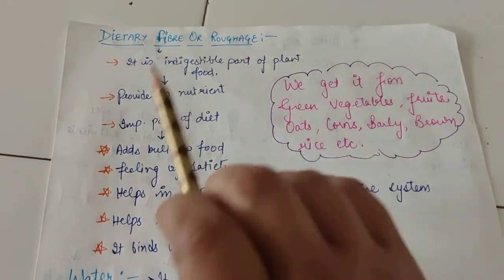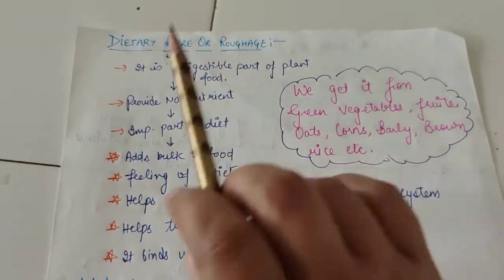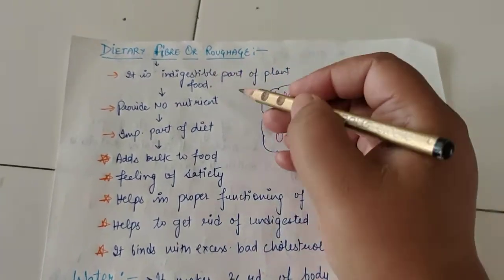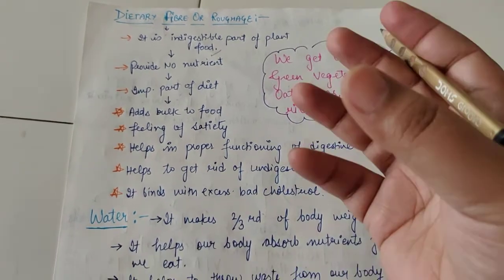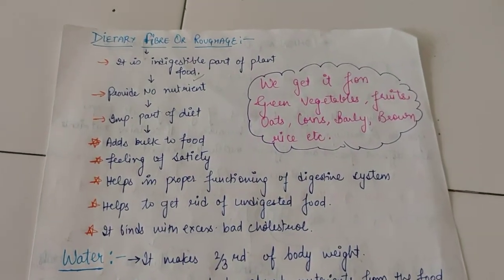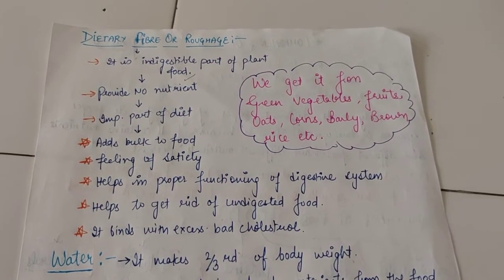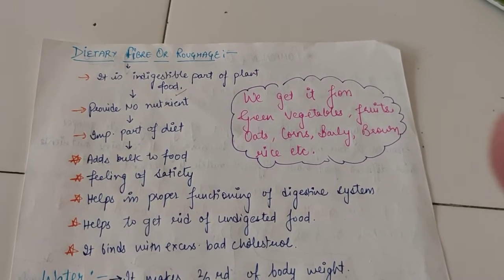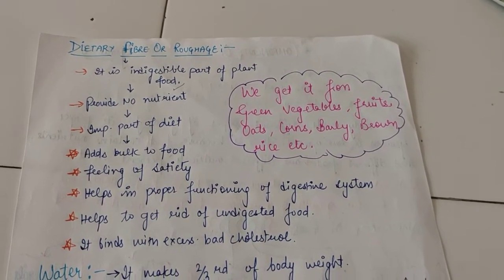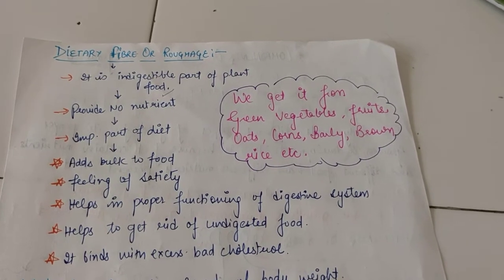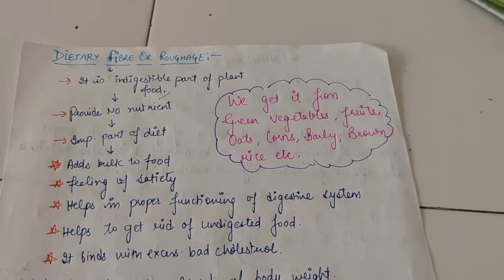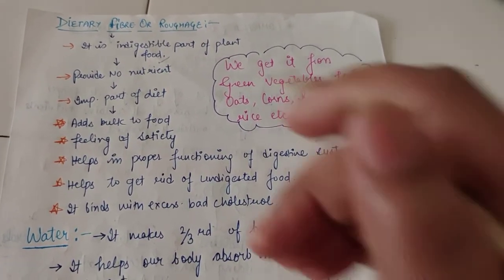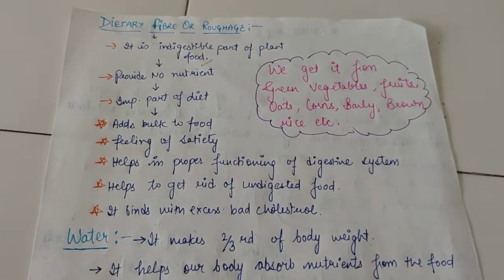The next and very important component of our food is dietary fiber or roughage. Roughage is the indigestible part of plant food. When we eat a fruit or anything obtained from a plant, it always has a peel or skin on it. That skin of a fruit, vegetable, or grams that we eat is indigestible — our body cannot digest it.